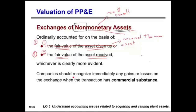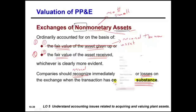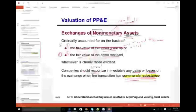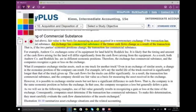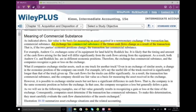We also need to know that companies should recognize — meaning record — immediately any gains or losses when the transaction has commercial substance. This is an important term. If the transaction has commercial substance, we recognize both gains and losses. An exchange has commercial substance if the future cash flows as a result of the transaction change.